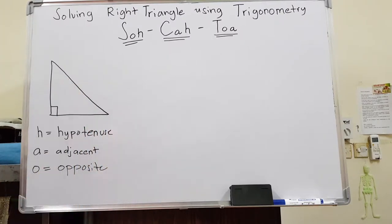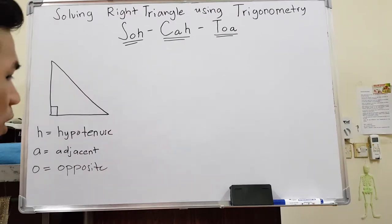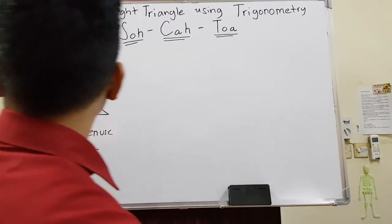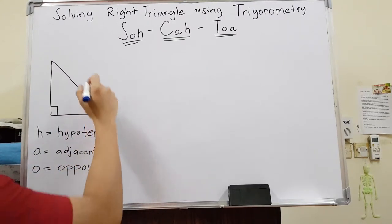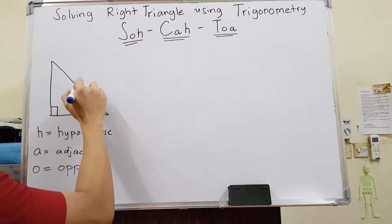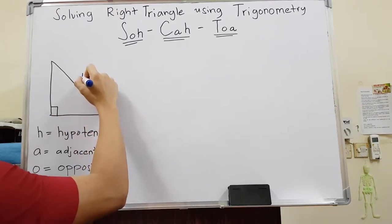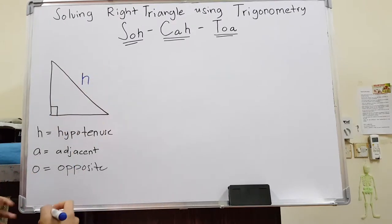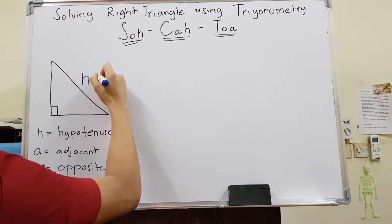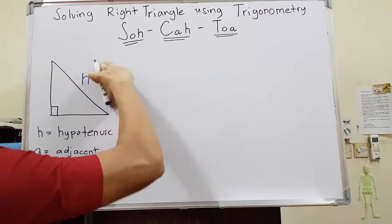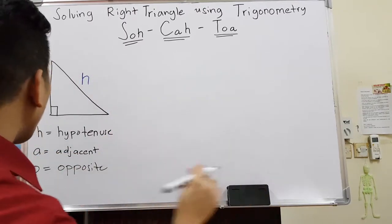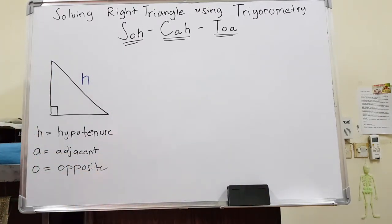The question is: which side is the opposite, which is the adjacent, and which is the hypotenuse? It depends. But the only fixed thing is the hypotenuse — it is always the longest side and is always fixed. Unlike the adjacent and opposite, they depend on the angle.